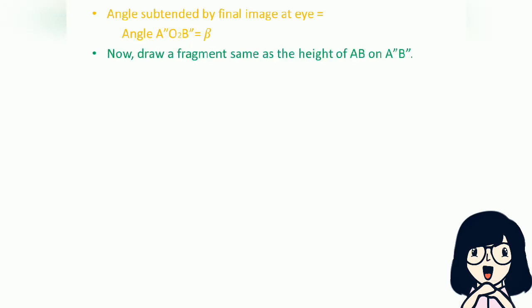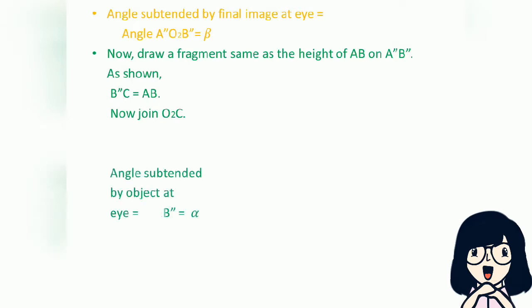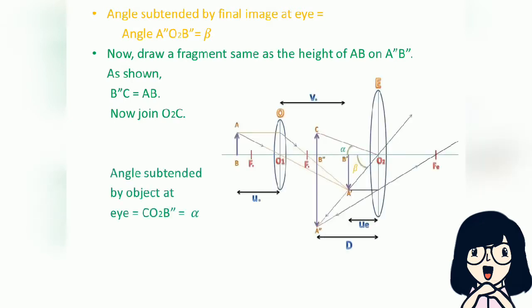The angle subtended by the final image at the eye equals angle A''O2B'' = beta. Now, draw a fragment the same height as AB on A''B''. As shown, B''C = AB. Joining O2 to C, the angle subtended by the object at the eye equals C O2 B'' = alpha.